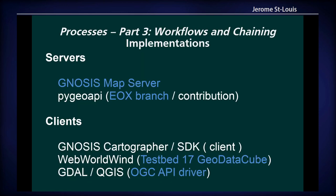These are some implementations of Part 3: the Gnosis Map Server and PyGeoAPI in the EOX branch. In terms of clients, Gnosis Cartographer and the Web Whirlwind testbed 17 geodata cube supported this as well. And in GDAL and QGIS, the OGCAPI driver for GDAL supports Part 3 already, even though it's a draft at this point.